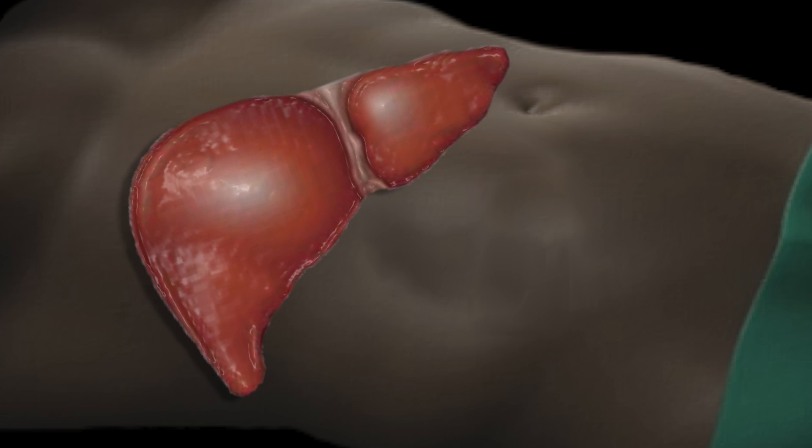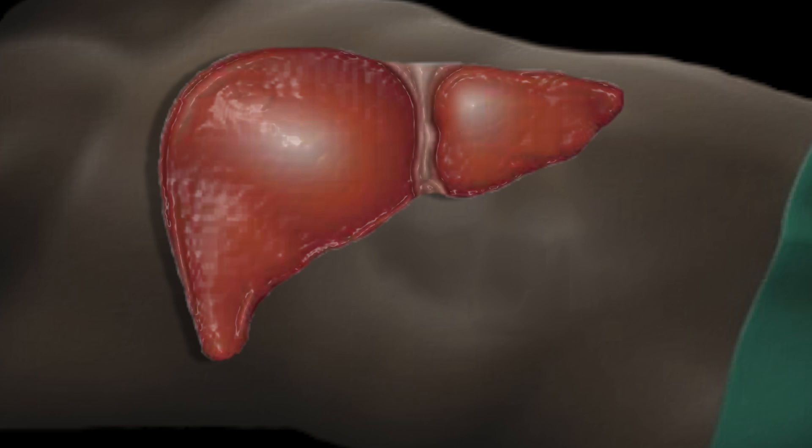The liver is in the right upper abdomen and serves many functions, including removing substances sent to it from the intestines.